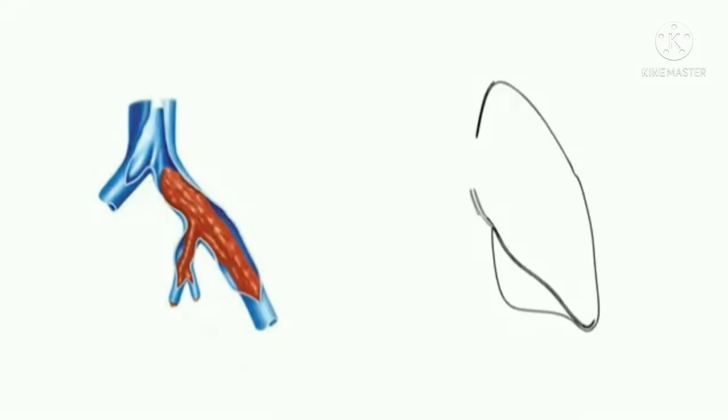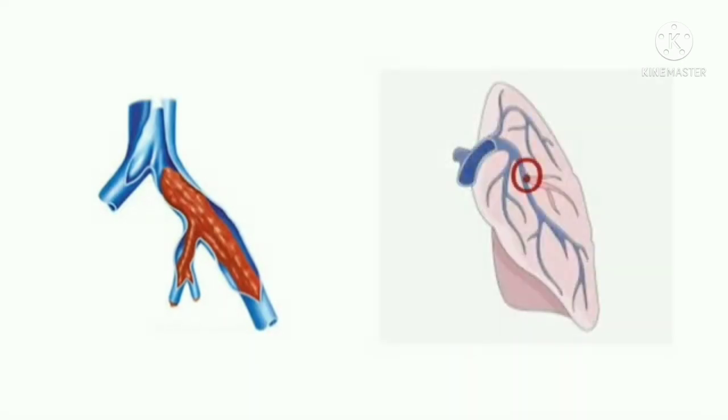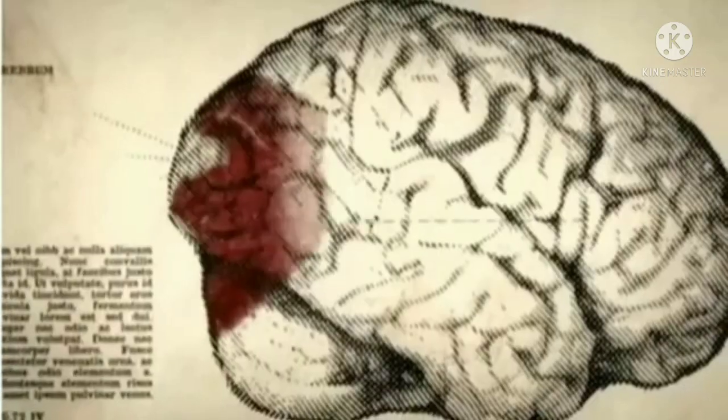It can involve the veins in your leg, the arteries in your lungs, and so on and so forth. And when this clot hits the brain, it will deprive a certain area from blood supply, which results in a stroke.